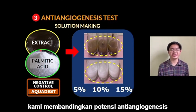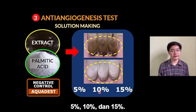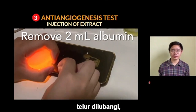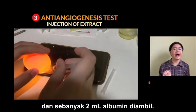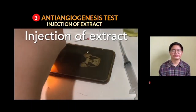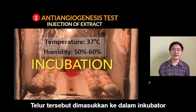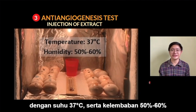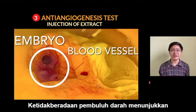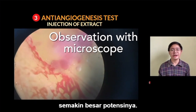In this research, we compared the anti-angiogenesis potential of sheathlichen extract and palmitic acid in three different concentrations: 5%, 10%, and 15%. The negative control is aqua dest. To do the test, we poked a hole and removed 2 ml of the albumin. We made another hole and injected 1 ml of the extract. We closed the hole and labeled the egg. The egg was put in an incubator at 37 degrees Celsius and humidity 50 to 60%.